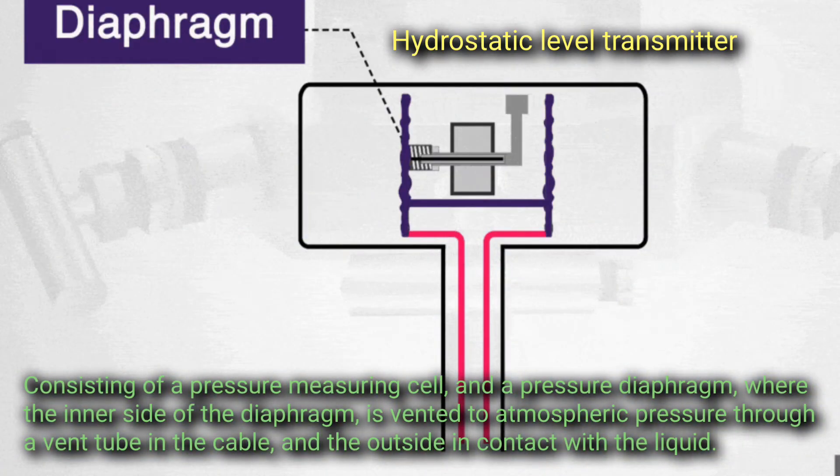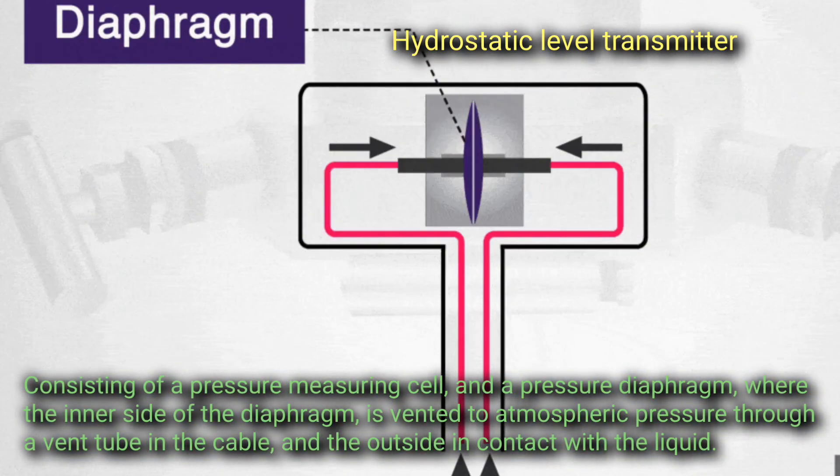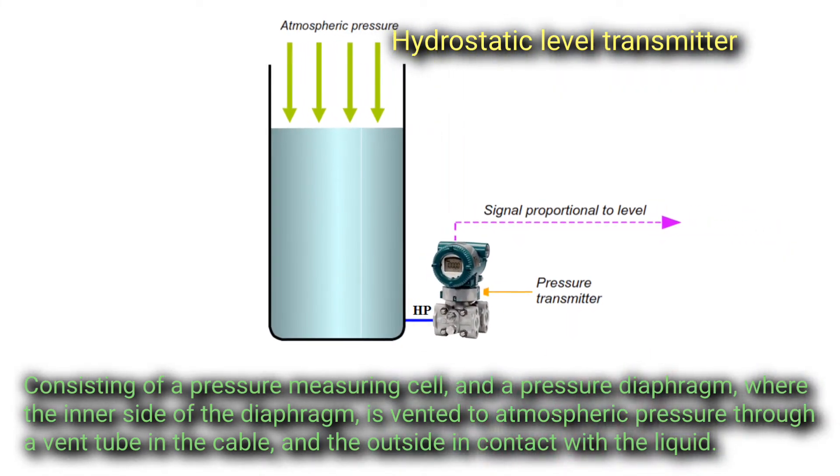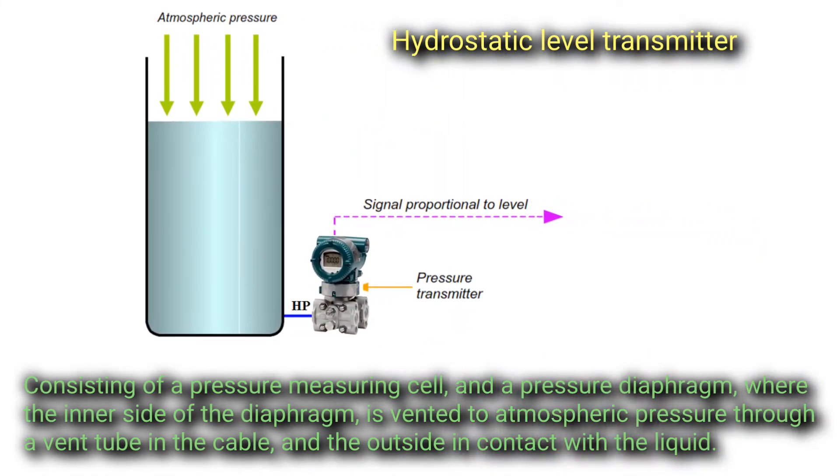The inner side of the diaphragm is vented to atmospheric pressure through a vent tube in the cable, and the outside is in contact with the liquid.